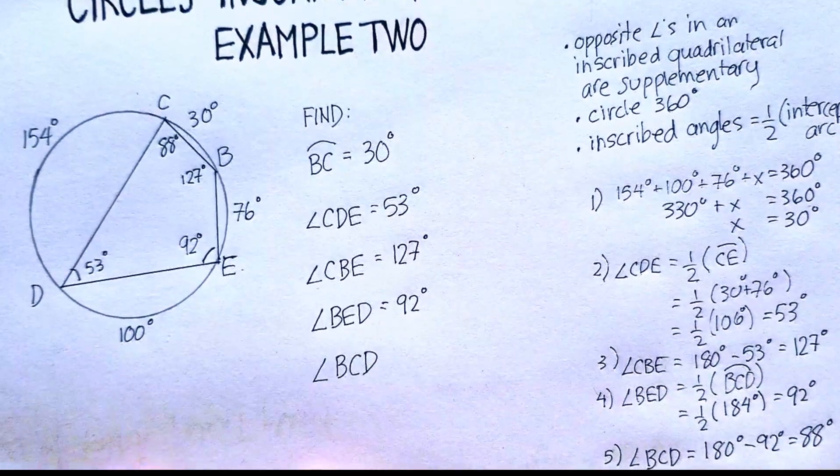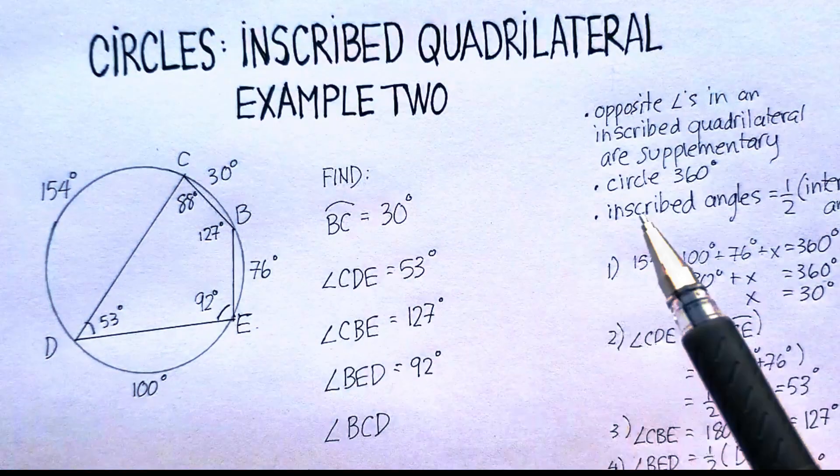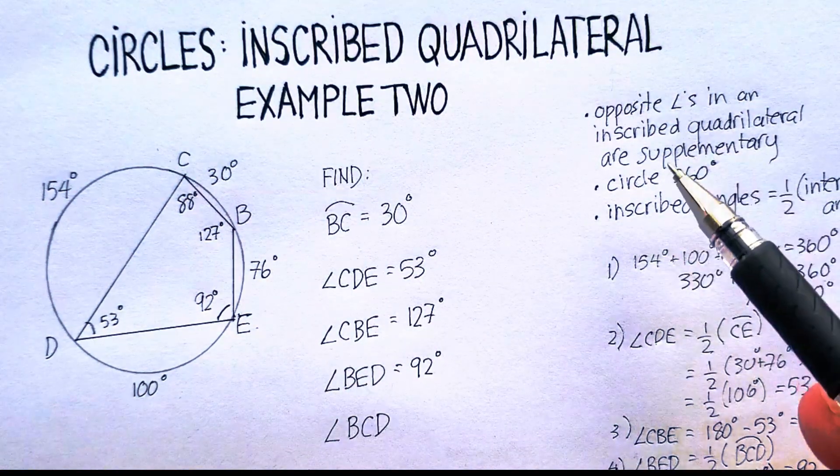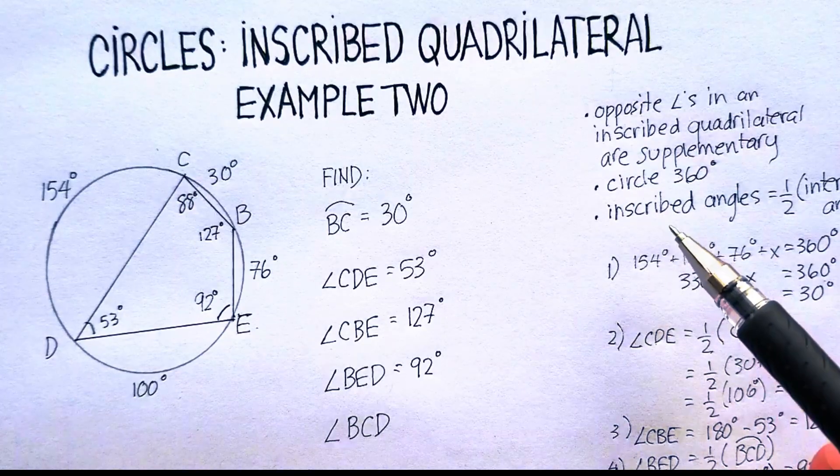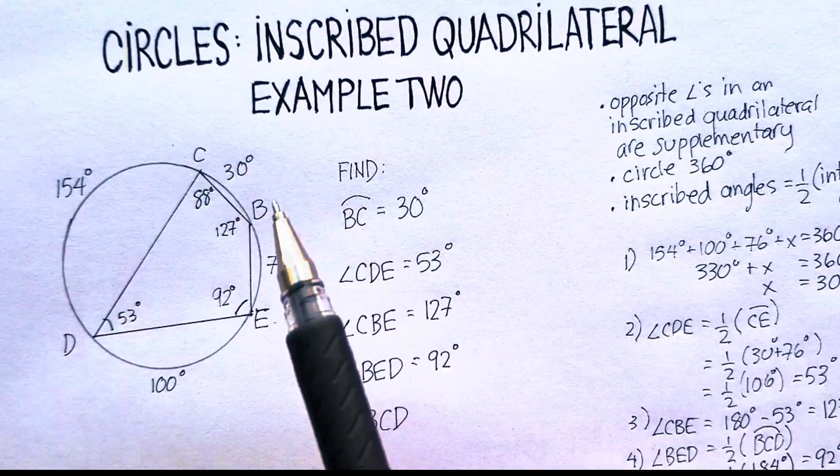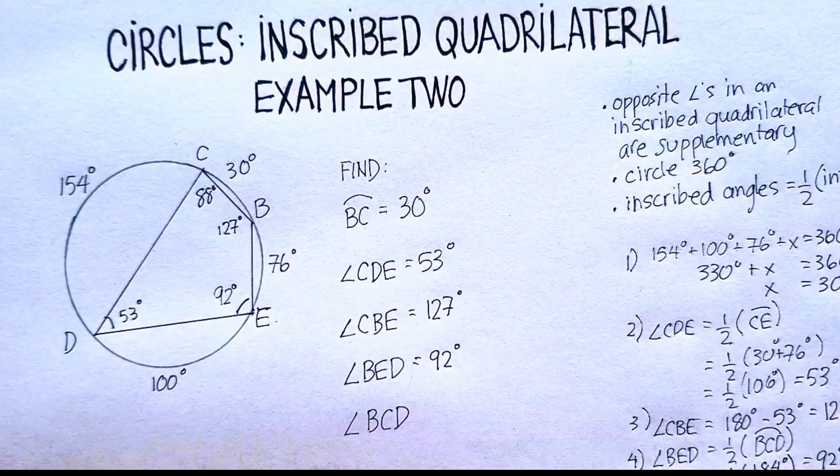So again, let's just go over that real quickly. How did I do this? First of all, I just looked at the problem. I tried to remember everything I could about an inscribed quadrilateral and circles. Made sure I remembered all these formulas. And then I just started building my answers one after another. Hope that was helpful.